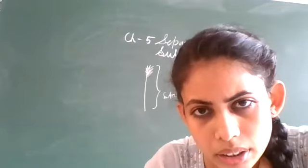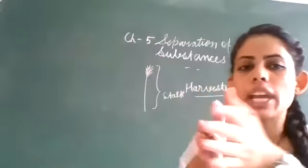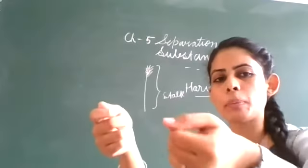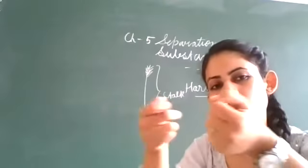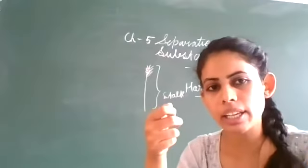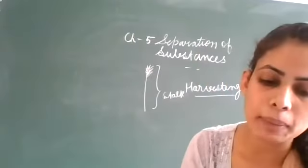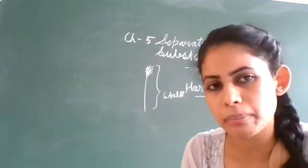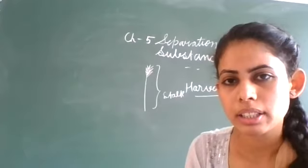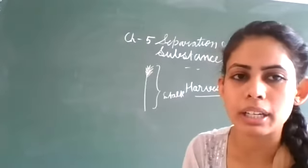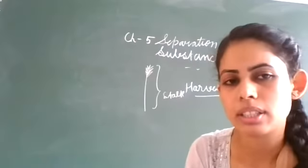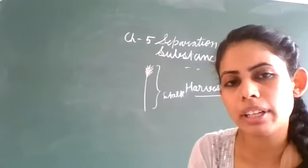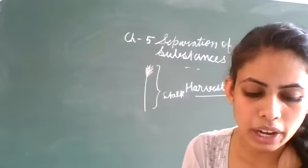A student asks: what is the meaning of churning? Churning means shaking. You can see the picture in figure 5.2 — there is a rope and you push and pull it. From the curd or milk, you get butter. Now machines are also available that do this work.